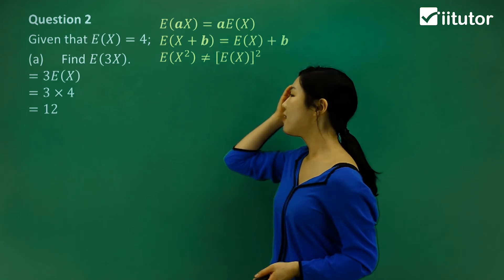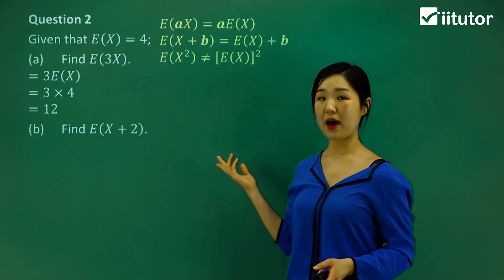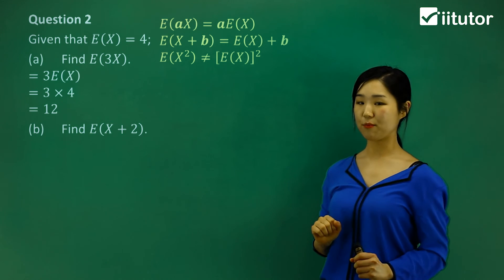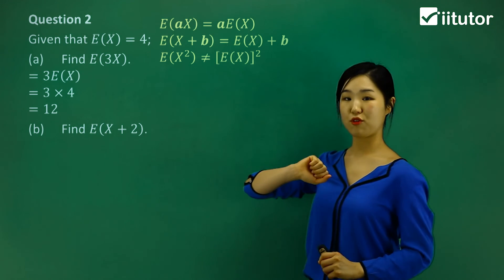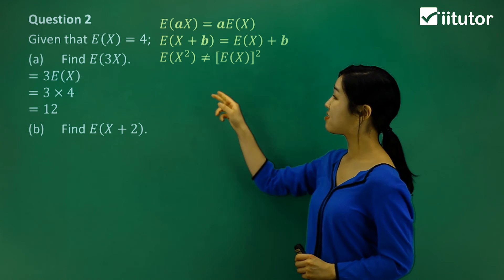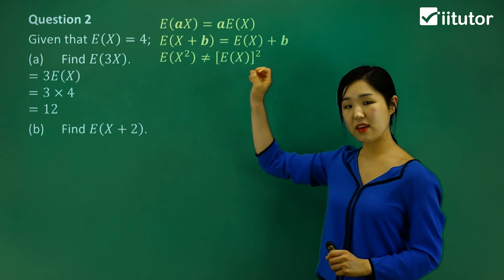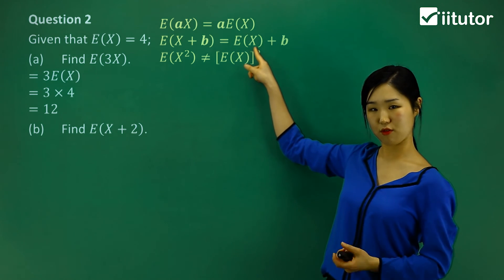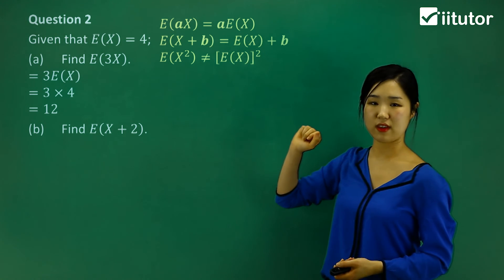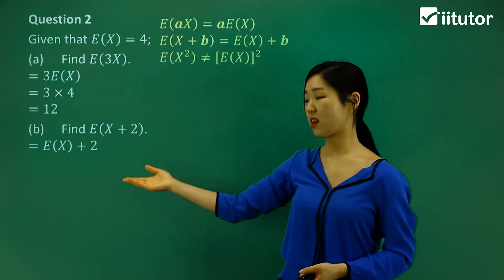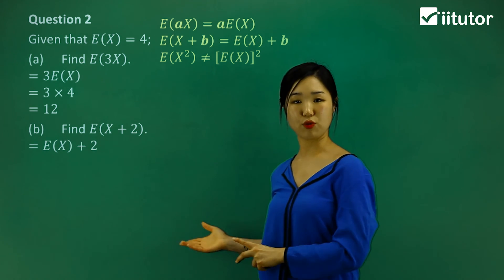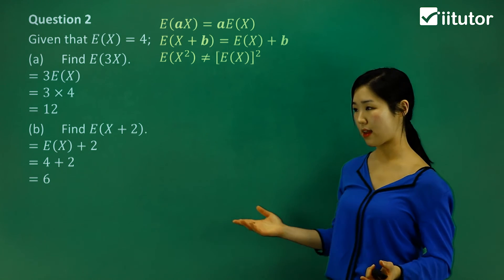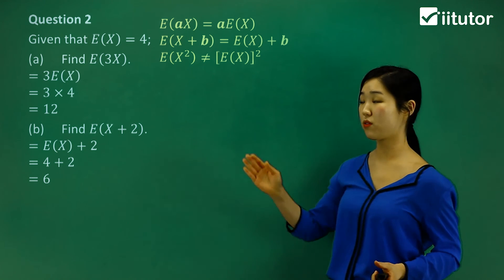Let's do part B, finding the expected value of x plus 2. We're going to use the second theorem, which tells us that E(x + b) — the b can pop out, giving E(x) plus b. In this case b is 2, so it becomes E(x) plus 2. Since E(x) is 4, that's 4 plus 2, which equals 6. Very simple — all I did was follow the second theorem.